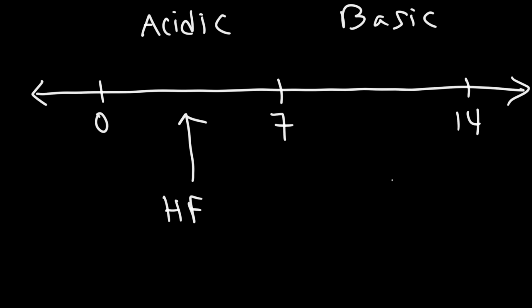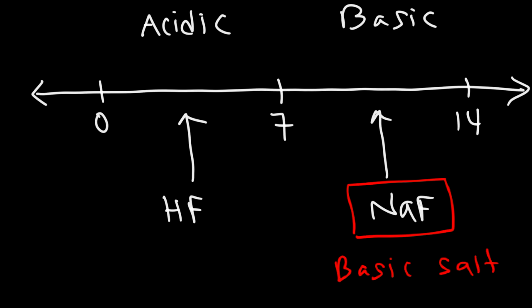So if we were to put sodium fluoride in water, the pH is going to be above 7. So this is considered a basic salt, because it's a salt that, if you dissolve in water, the pH will increase. If you put, let's say, NH4Cl, that is an acidic salt, because it has NH4+ the ammonium ion, which is acidic. And so that's going to produce a pH less than 7.